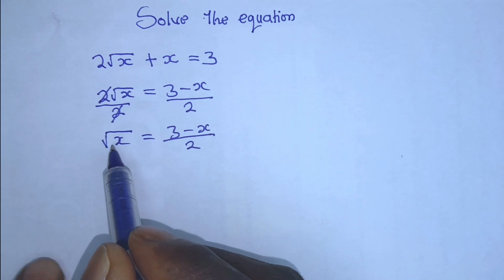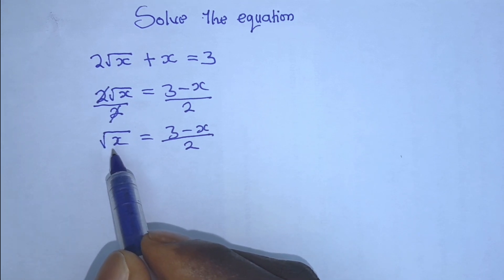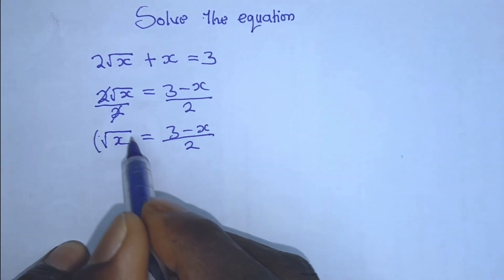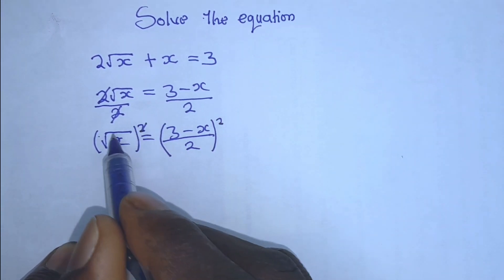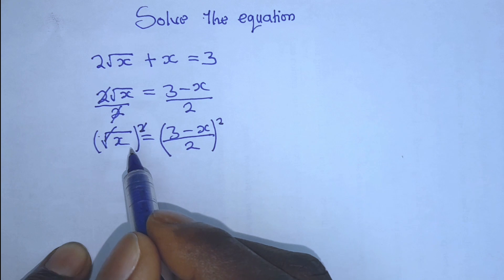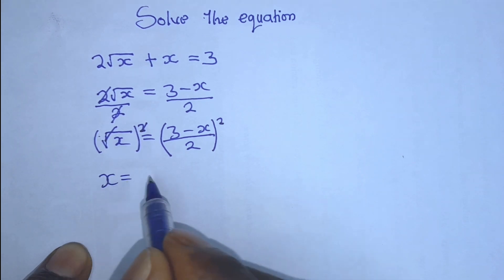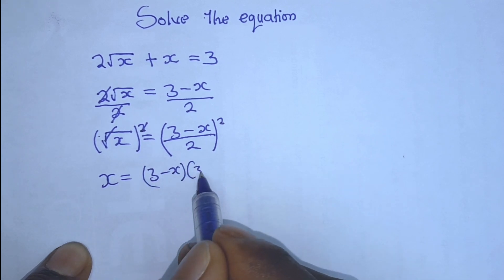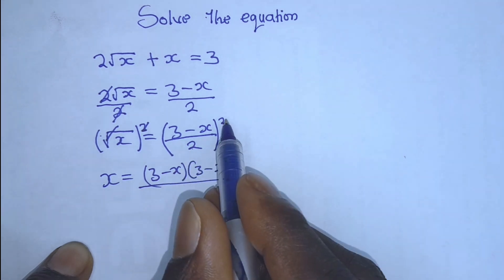So, to get rid of this square root of x, we can square both sides of the equation. The square gets cancelled with the square root, so we are left with x is equal to 3 minus x, all over 2, squared — which is 4.